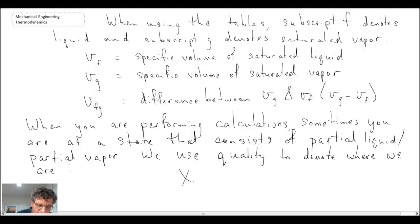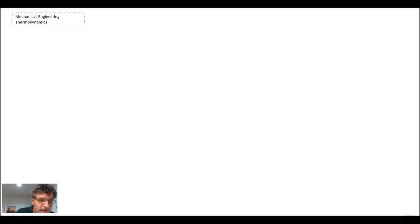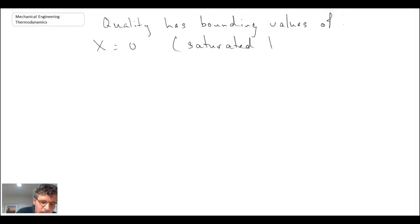And so the quality is defined as being the mass of vapor in our system divided by the mass total. So when you're way over on the right hand side on the saturated vapor line, you'll have a quality of one. And when you're way over on the left hand side with saturated liquid, you have a quality of zero. So quality has bounding values of X equals zero for saturated liquid and X equals one for saturated vapor.